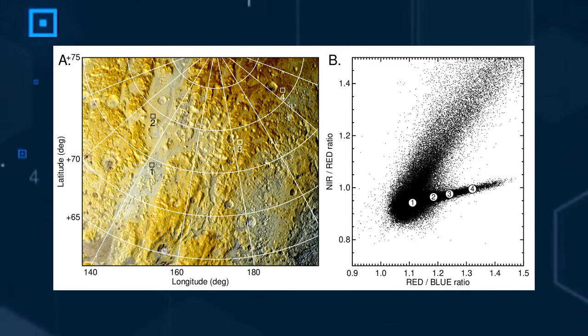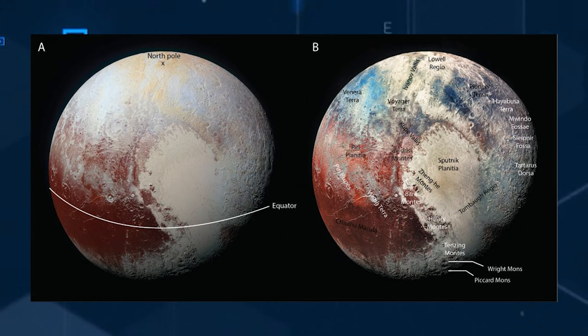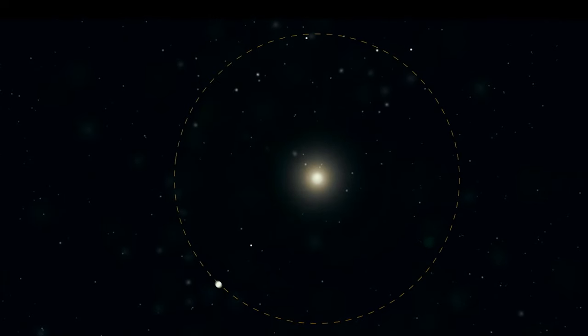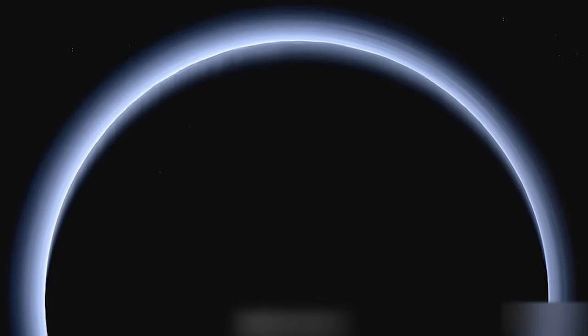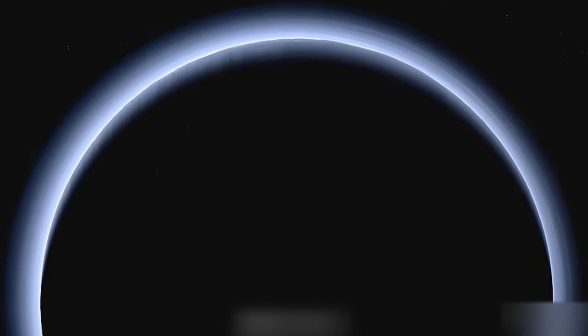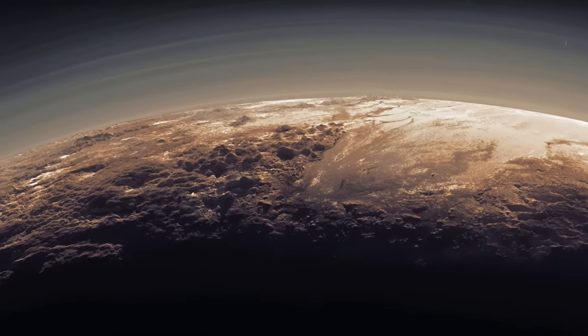This phenomenon is attributed to Pluto's substantial axial tilt in relation to the plane of its orbit, positioning its north pole to face the sun during a portion of its orbital journey. Consequently, the density of Pluto's atmosphere has increased threefold over the past 30 years.